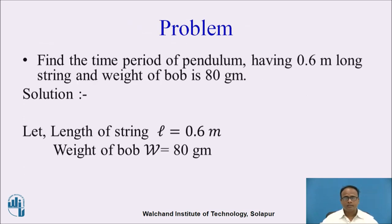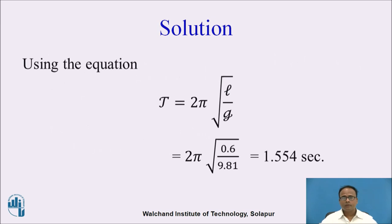Now let us consider a problem: Find the time period of a pendulum having a 0.6 meter long string and weight of bob is 80 grams. Given: length of string L = 0.6 m; weight of bob W = 80 grams. Using T = 2π √(L/g) = 2π √(0.6 / 9.81), we get the time period of the pendulum as 1.554 seconds.